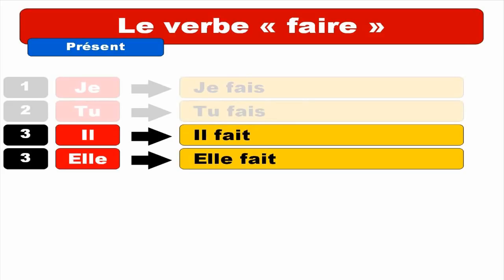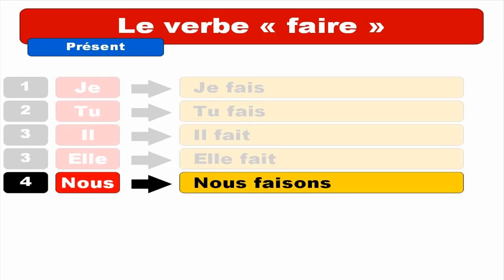And then feminine form — ELLE FAIT. Same thing, final T is not pronounced. ELLE FAIT. Repeat. ELLE FAIT. Then comes NOUS. NOUS FAISONS. Here it's quite tricky because we write it with A-I — FAISONS — but we pronounce it NOUS FAISONS. Final S is not pronounced. NOUS FAISONS. Repeat. NOUS FAISONS.